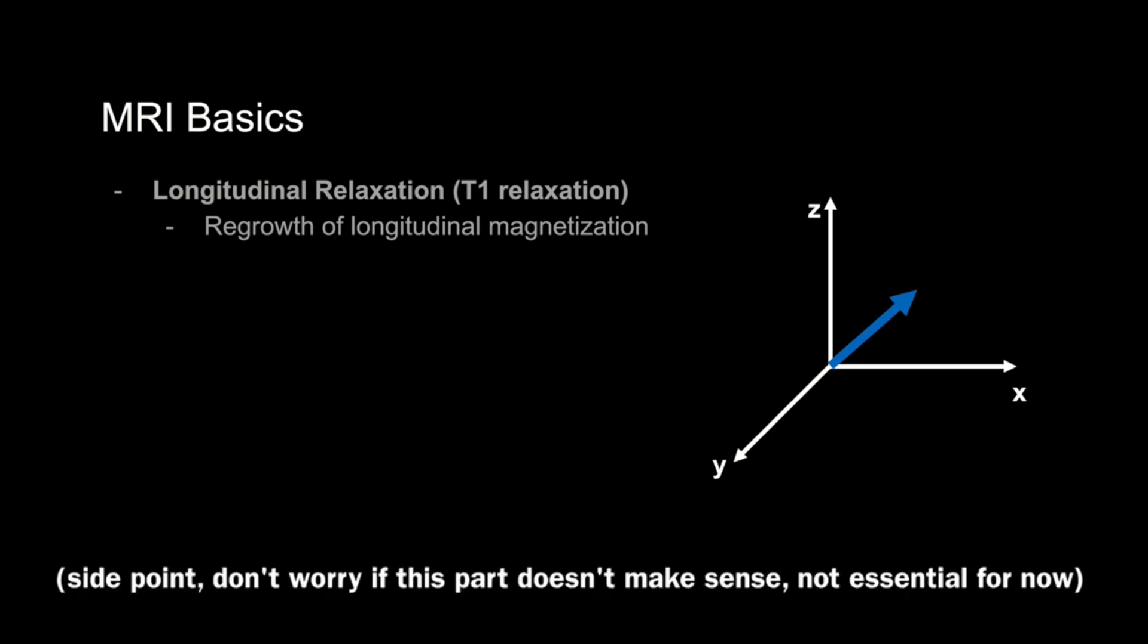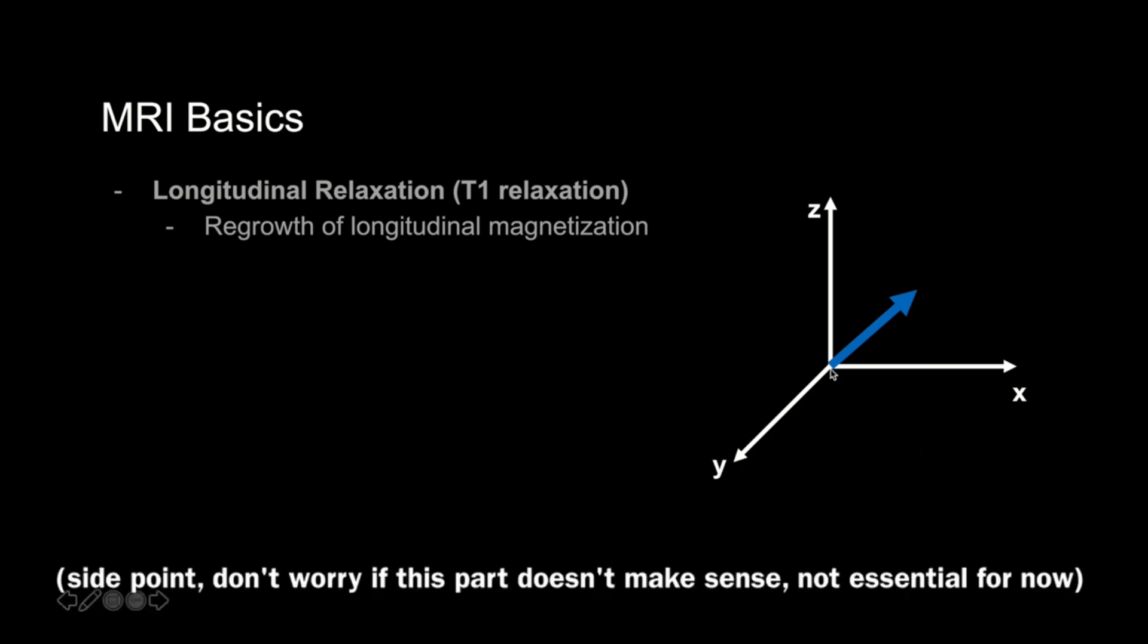If the vector hasn't recovered all the way back into the Z axis, it has a partial longitudinal component. If we apply another RF pulse when it has a partial component, the resultant net magnetization in the transverse plane will be equal to the amount of the Z axis component just prior to the RF pulse. This is important because, as we mentioned, we detect signal in the XY plane, so in order to detect differences in T1 relaxation, we need to allow them to relax at different rates in the Z axis and then apply an RF pulse and listen in the XY plane.